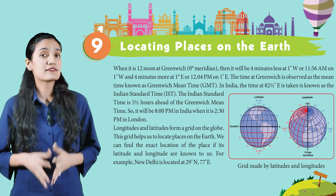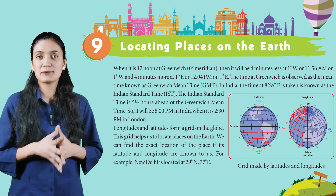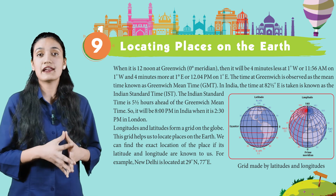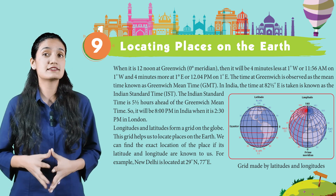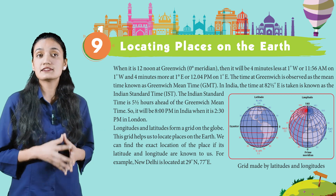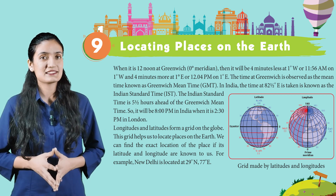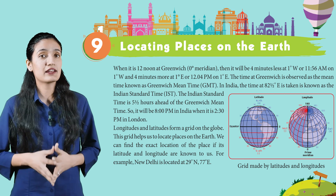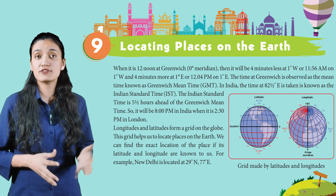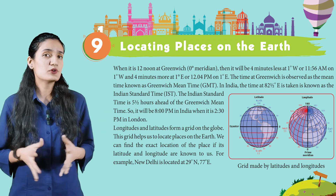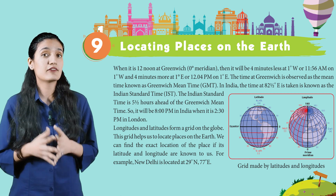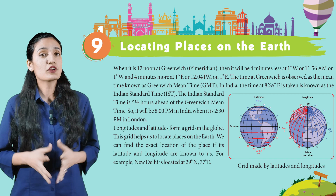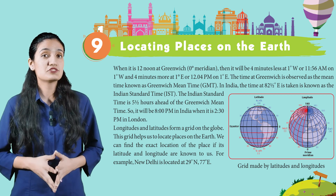The time at Greenwich is observed as the mean time, known as Greenwich Mean Time (GMT). In India, the time at 82.5 degrees East is taken and is known as Indian Standard Time (IST). The Indian Standard Time is five and a half hours ahead of the Greenwich Mean Time, so it will be 8 PM in India when it is 2:30 PM in London.